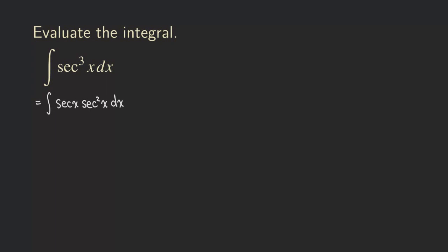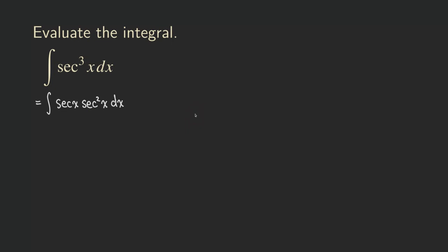So now if you look at this, this is secant x and then secant square x. You may say what do we do next. Because we have a product here, we can actually try integration by parts. So we can actually integrate this by parts. Before we actually start, we are going to recall the integration by parts formula first.